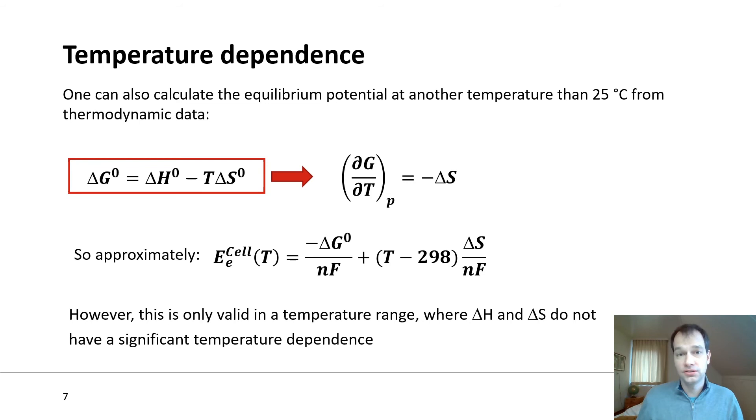One issue that we are facing when using this thermodynamic data is that they are given at standard conditions, which means 25 degrees Celsius and 1 bar. Sometimes we are looking for data at other temperatures. For example, if we want to run our process at 60 degrees Celsius, we want to know the equilibrium cell potential at 60 degrees Celsius. So how do we then do that?